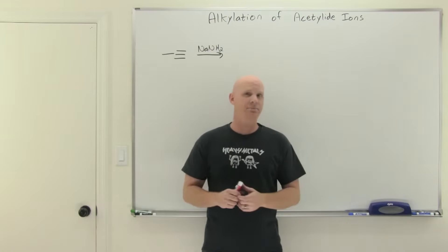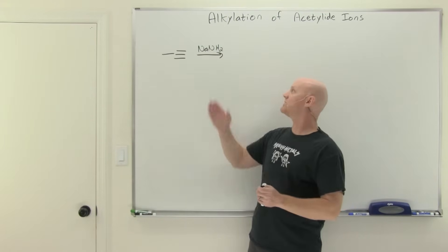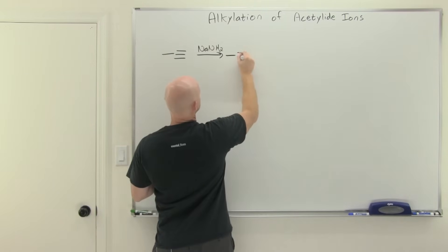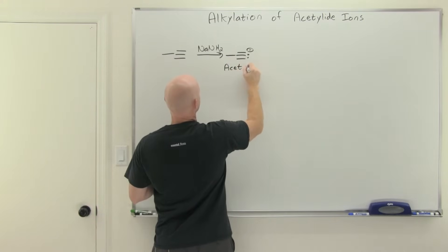All right, so towards the beginning of this chapter we learned how a terminal alkyne can be deprotonated using sodium amide, and the resulting conjugate base product is called an acetylide ion.